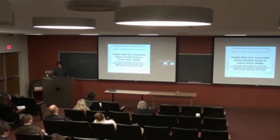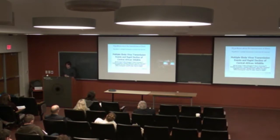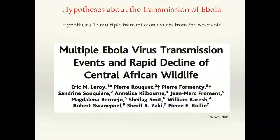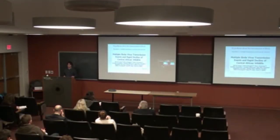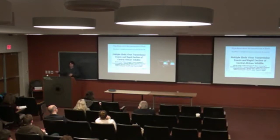When investigating what happens during the gaps between two human outbreaks, there are two main hypotheses put forward by researchers. The first is called the multiple transmission events hypothesis from the reservoir. According to this hypothesis, described in a 2004 paper, there are one or more species that carry the virus, hosting many different Ebola strains. Sometimes contacts between these species and human populations trigger an outbreak. If true, you would expect each human Ebola outbreak to show a different strain because so many circulate in the reservoir species.